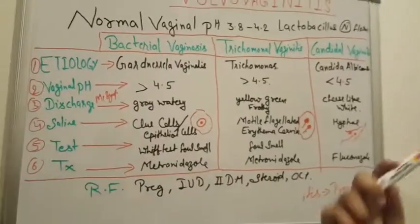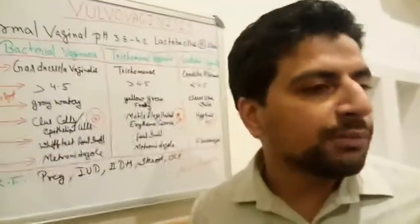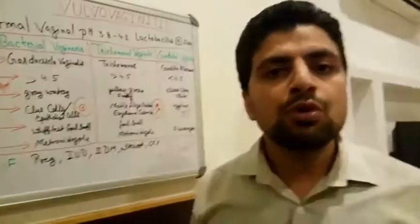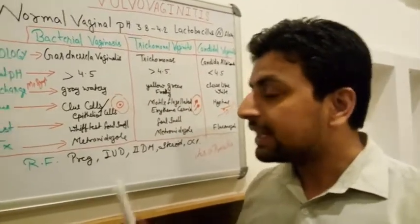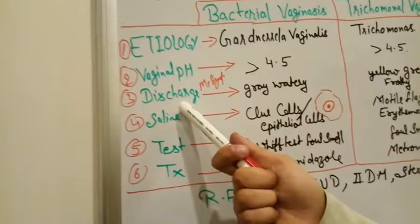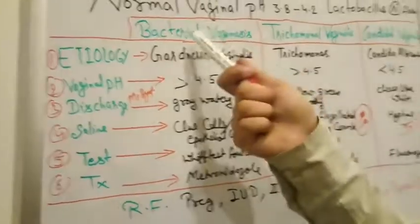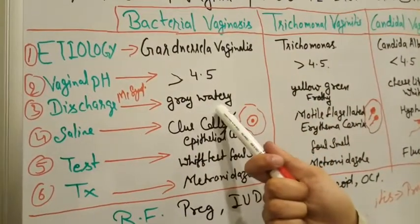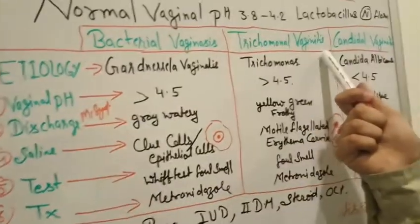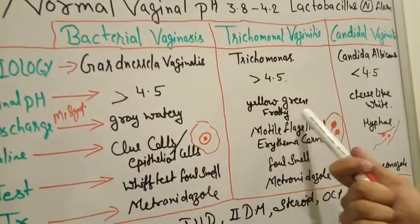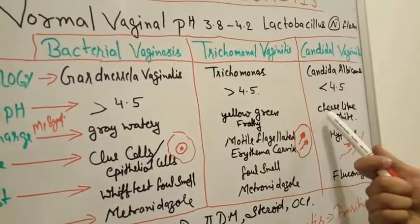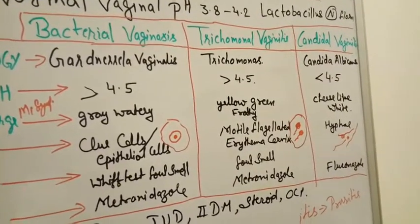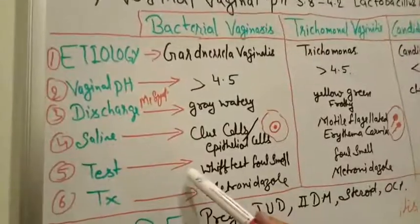The most common symptoms — particularly discharge — vary by type. In bacterial vaginosis there is a gray watery discharge. In trichomonal vaginitis there is a yellow-green frothy discharge. In candidal vaginitis there is a cheese-like white discharge.